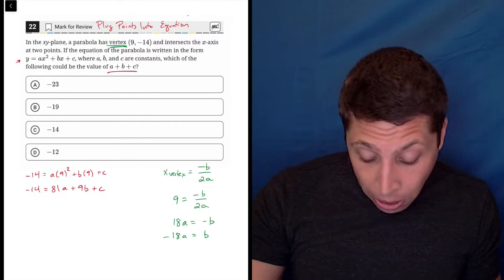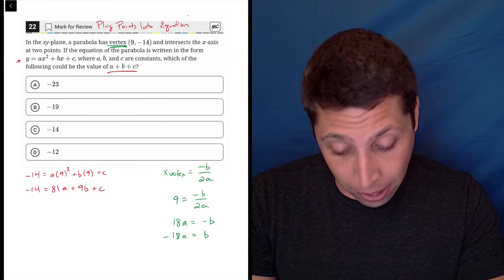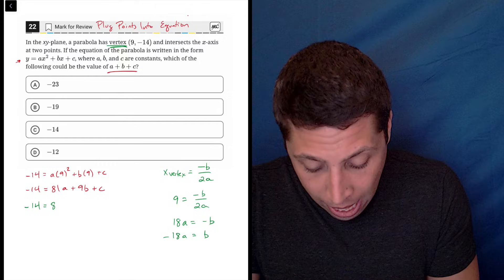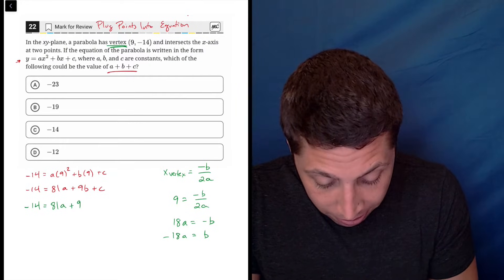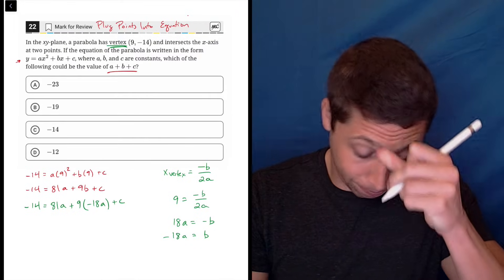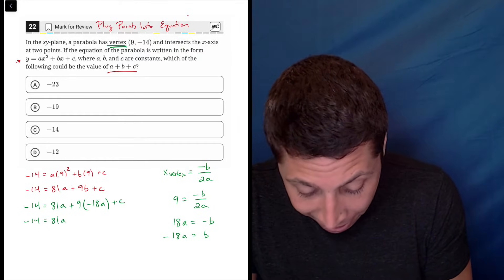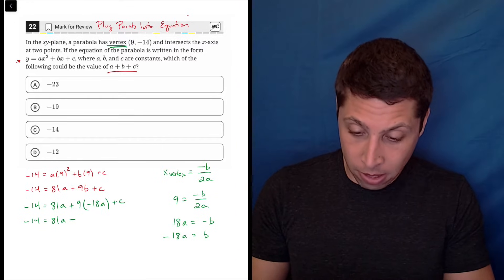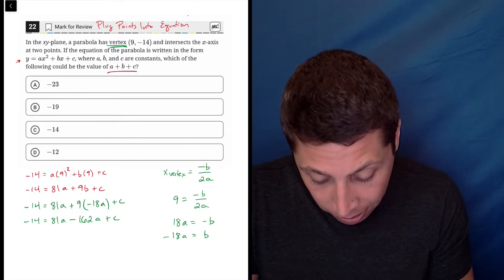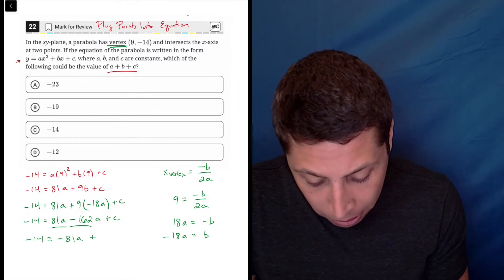Well, I could substitute that. I could put that into my red equation. And then at least I have one less variable to worry about. So maybe that's something. So let's do that. So now I would have, I'll use green to kind of continue the thought process here, 81A plus nine times negative 18A plus C. All right, I can clean this up too. So negative 14 is equal to 81A minus nine times 18, nine times 18, 162, 162A plus C. We can combine like terms, negative 14 is equal to negative 81A plus C.